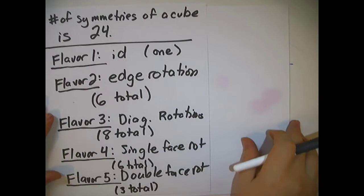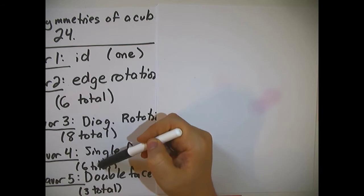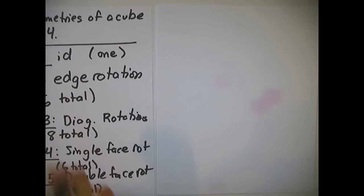Those are all the flavors of symmetry for the cube. One plus six is seven, plus eight is 15, plus six is 21, plus three is 24. We have all 24 symmetries explicitly enumerated.